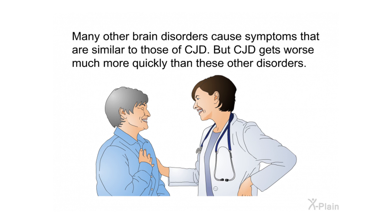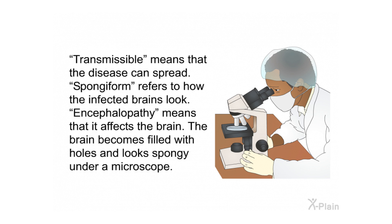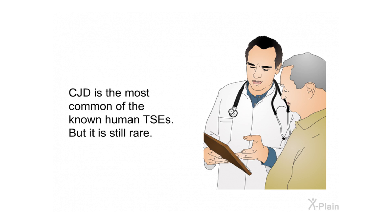Many other brain disorders cause symptoms similar to those of CJD, but CJD gets worse much more quickly than these other disorders. CJD belongs to a family of human and animal diseases known as TSEs, which stand for transmissible spongiform encephalopathies. The brain becomes filled with holes and looks spongy under a microscope. CJD is the most common of the known human TSEs, but it is still rare.